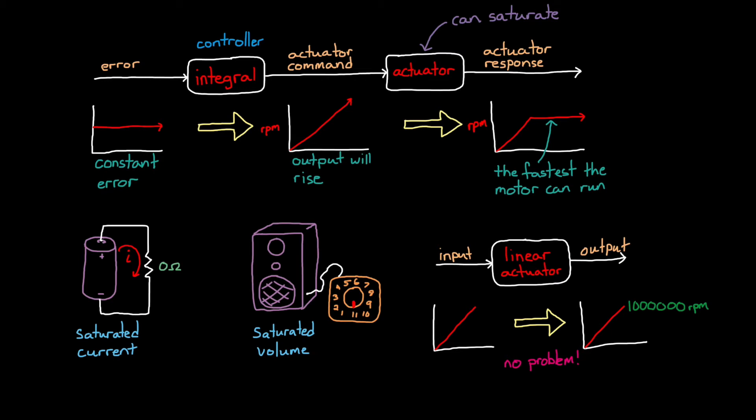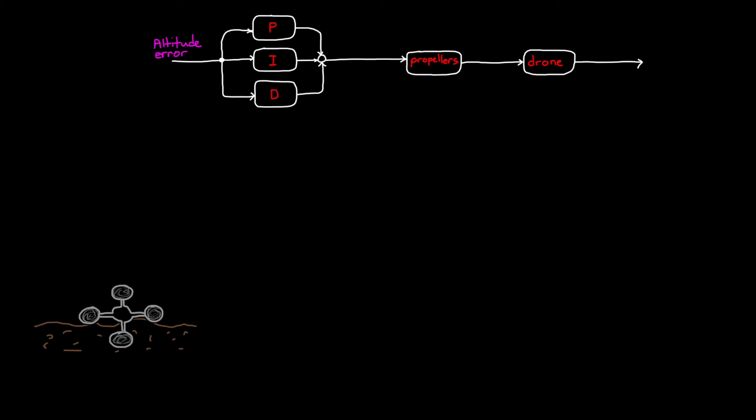We can figure out why by asking the question, how does our PID integral handle an actuator that saturates? Assume we have the drone from the last video, and we're trying to control its altitude with the PID control law. The altitude error goes through the three PID branches, and then sums together to get a propeller command. The propellers are the actuators, and they react to that command and spin up or down to some speed. The propellers generate a force that lifts the drone, the process, into the air and changes its altitude.